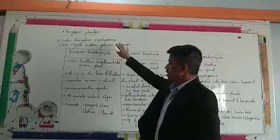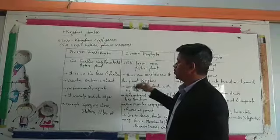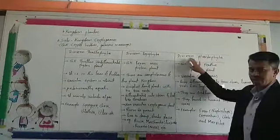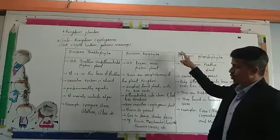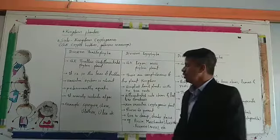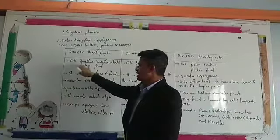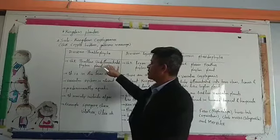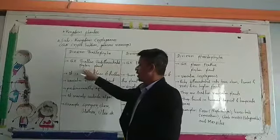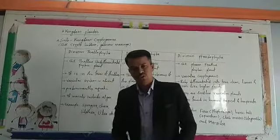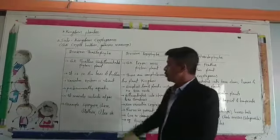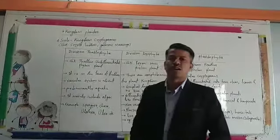Kingdom Cryptogamia is further subdivided. The first division is Thallophyta. Thallophyta comes from the Greek word: thalos means undifferentiated plant body, and phyton means plant. So Thallophyta means undifferentiated plant bodies.